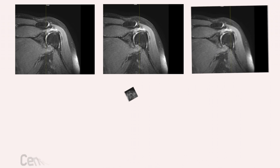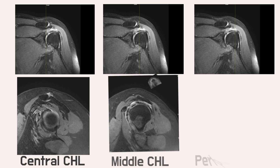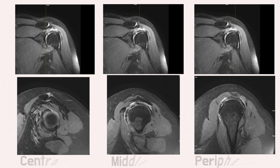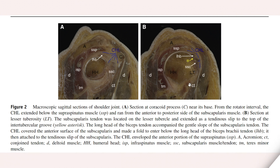Once again, the coracohumeral ligament will be described as central, middle, and peripheral parts on coronal, sagittal, and axial images. These macroscopic sagittal sections of the humerus joint show similar structures to the MRI sagittal scan.